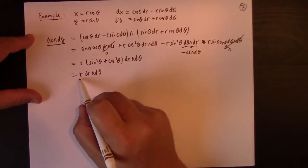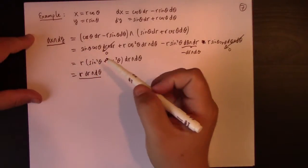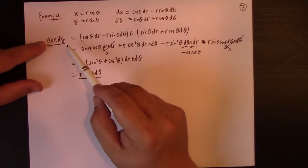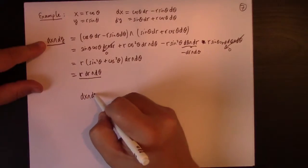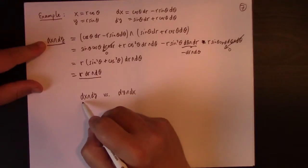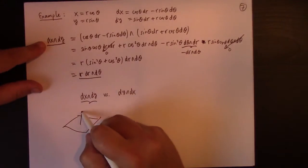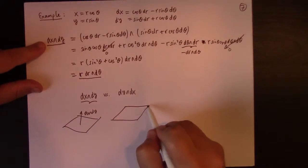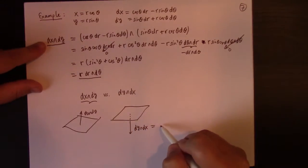So, the wedge product and exterior differentiation naturally encodes the Jacobians that you expect. And also, the other nice thing about the wedge product is it can tell the difference between dx wedge dy versus dy wedge dx. I might think about this as being sort of like an area with an upward normal, versus I could think about that as everything else being the same downward normal.